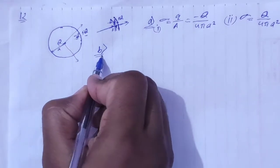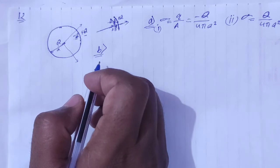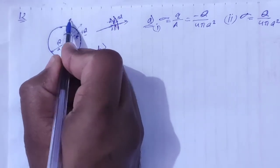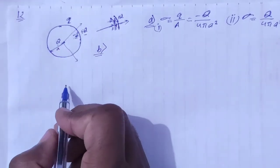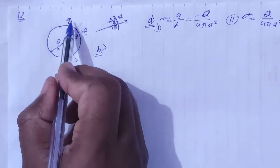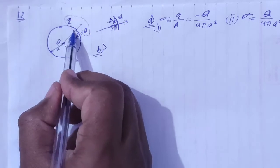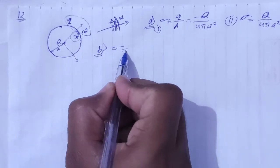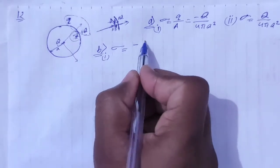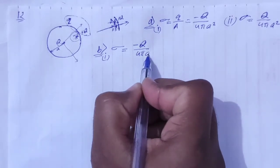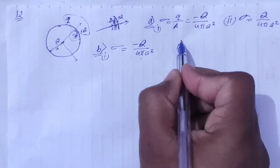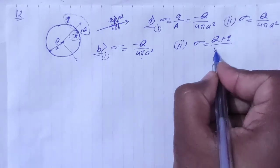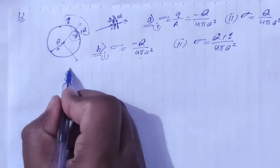Part B: if a charge q is put on the sphere, what would be the surface charge density on the inner and outer surface? Here, a small charge q is added. The inner surface charge density remains minus Q upon 4 pi A squared, because the inner surface is only affected by the central charge Q. The outer surface total charge is capital Q plus small q, so the outer surface charge density equals (Q + q) upon 4 pi A squared.